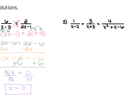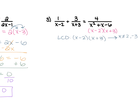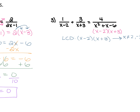For number 3, we have 1 over x minus 2 plus 3 over x plus 3 is equal to 4 over x squared plus x minus 6. That x squared plus x minus 6 factors to give us x minus 2 times x plus 3. So our least common denominator is x minus 2 times x plus 3, which means x cannot equal 2 and negative 3. The 1 over x minus 2 — since x minus 2 is already in your LCD, we cross that out and multiply that 1 by x plus 3. The 3 over x plus 3 — since x plus 3 is already in our LCD, we cross that out and multiply that 3 by x minus 2. The 4 is over the LCD, so we cross that denominator out and multiply the 4 by 1.